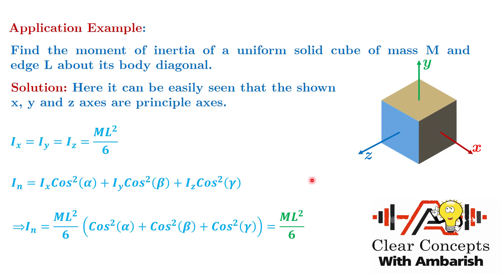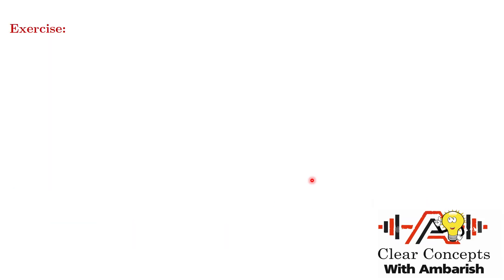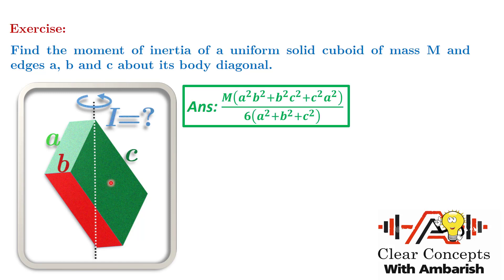As an exercise, find the moment of inertia of a uniform solid cuboid of mass M and edges A, B, C about its body diagonal. Use the same method: take X, Y, Z axes perpendicular to the three faces through the center of mass, convince yourself they form a principal axis set (IXY, IYZ, IZX all vanish), and apply the formula. The answer reduces to the cube result when A = B = C = L.